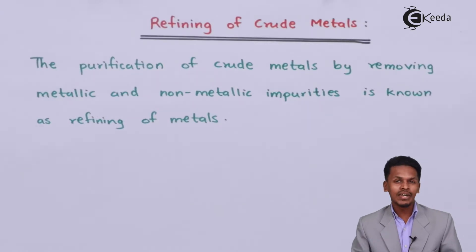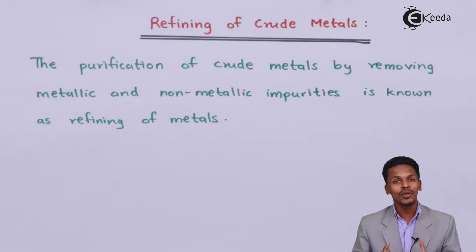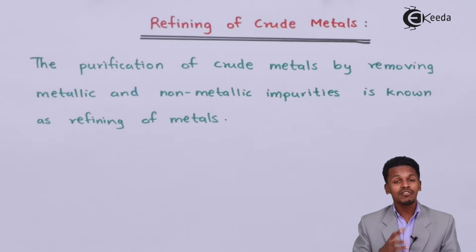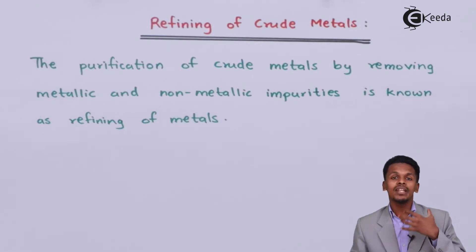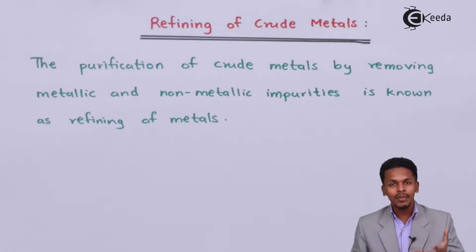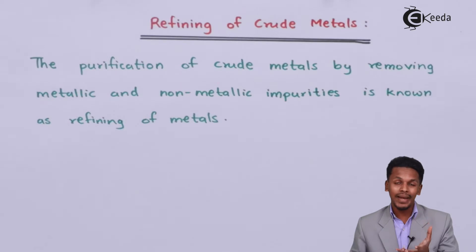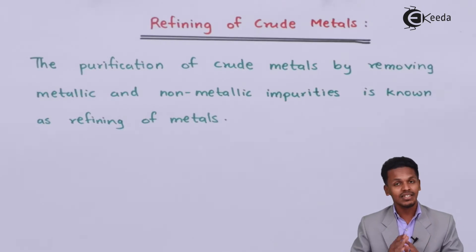And why is it very much necessary? The crude metal that we have obtained from a particular ore — we find other impurities associated with it, and that is the reason we have to remove those impurities. Those impurities may have been removed in the smelting or roasting process, but it is not certain that the metal obtained is pure. So it is better to refine it.